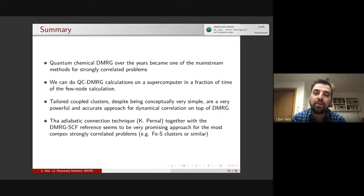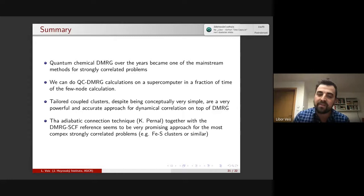So in summary, DMRG is a great method. It's not over the years. I think it's a mainstream. We can do it on a supercomputer in a fraction of time, as I showed you, do a few node calculation. Tailored coupled clusters have advantages, disadvantages. It can be accurate approach as long as you have some reasonable reference and the adiabatic connection technique can be good even if you don't have it. Okay. That's it. I would like to acknowledge my students and collaborators. Thank you for the attention.